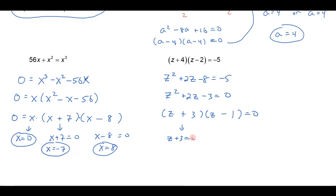So if I set each of those factors equal to 0, I'd get z plus 3 equals 0, so z is negative 3. And from this factor, if I set that equal to 0, I'd get z equals 1.